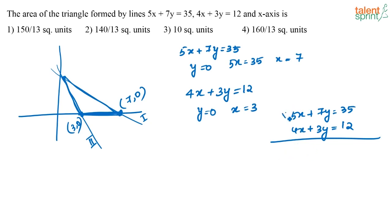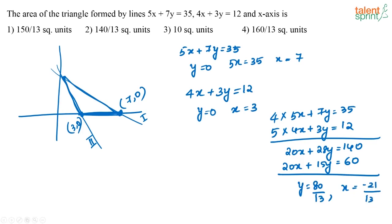How can I solve this? I can multiply this by 4 and this by 5 and I will get 20x plus 28y that is equal to 140 and 20x plus 15y that is equal to 60. When I solve, I get 13y is equal to 80 or y is equal to 80 by 13 and x is equal to minus 21 by 13.